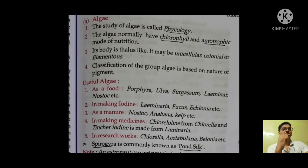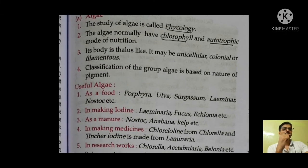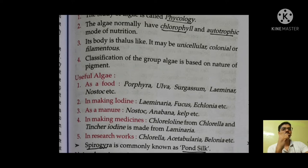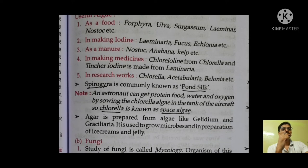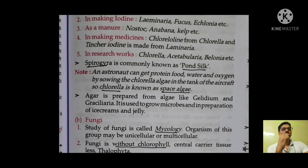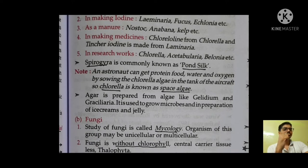The study of algae is phycology. Algae have chlorophyll and the mode of nutrition in algae is autotrophic — they are capable of preparing their own food. Spirogyra is commonly known as pond silk. Chlorella, an algae, is known as space algae because astronauts can obtain protein, food, water, and oxygen by growing chlorella in tanks in spacecraft.